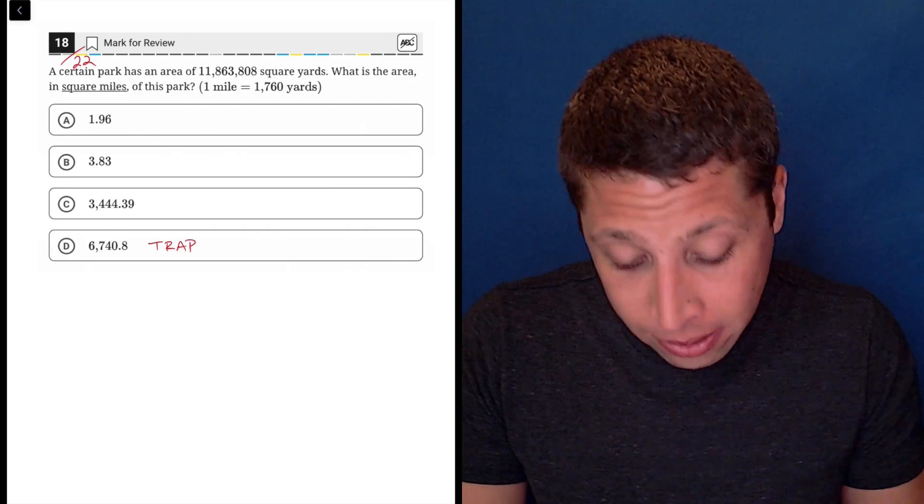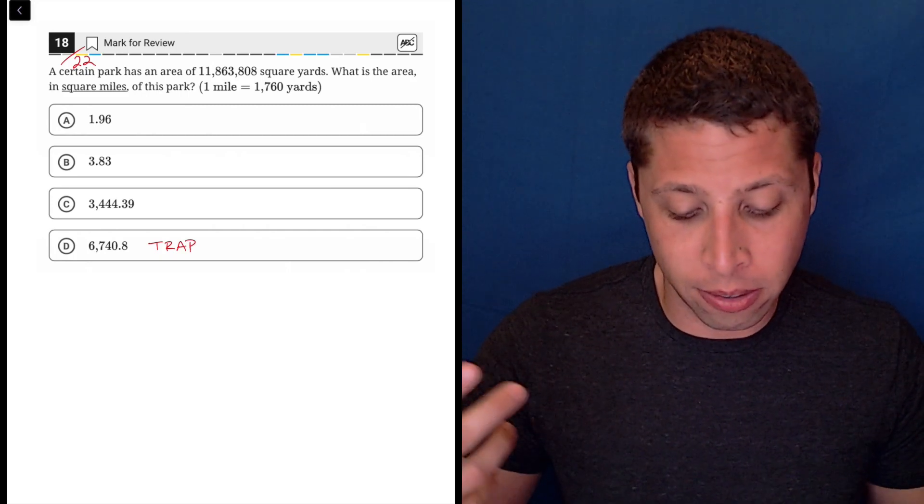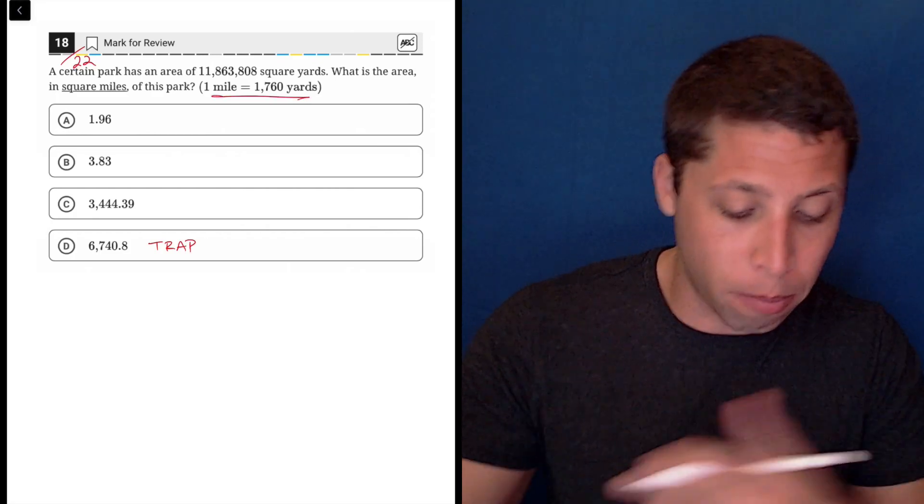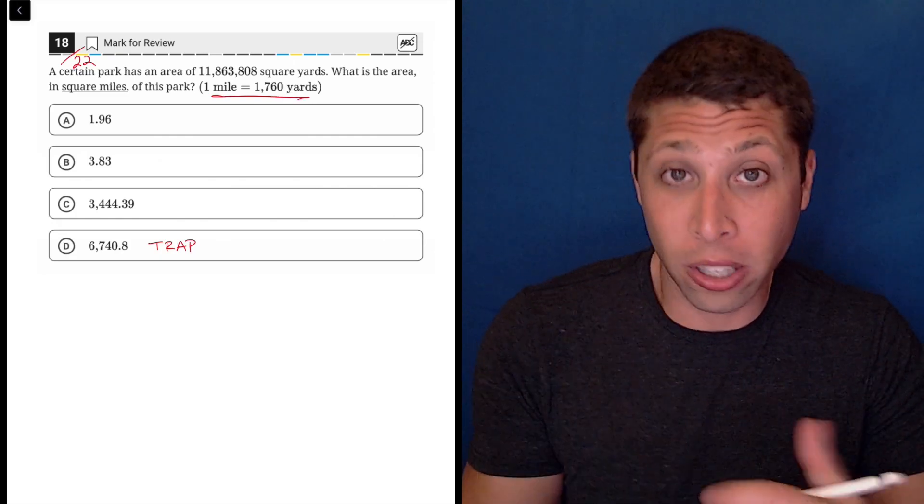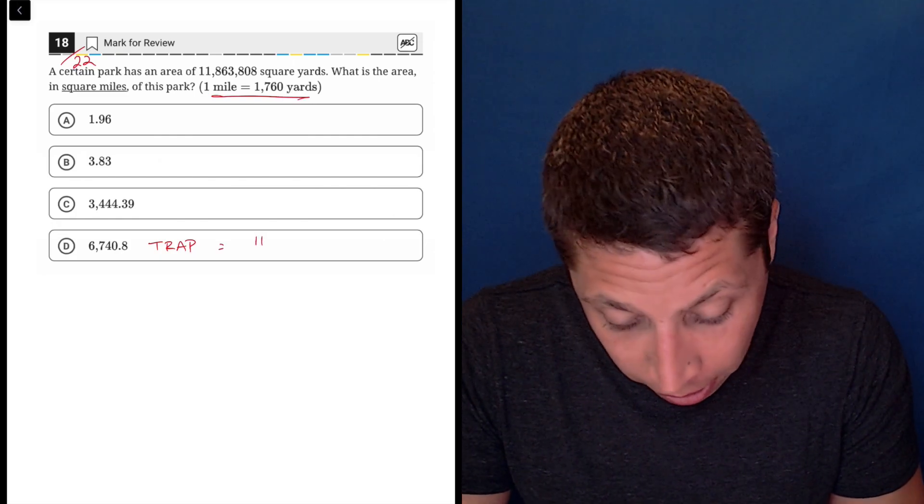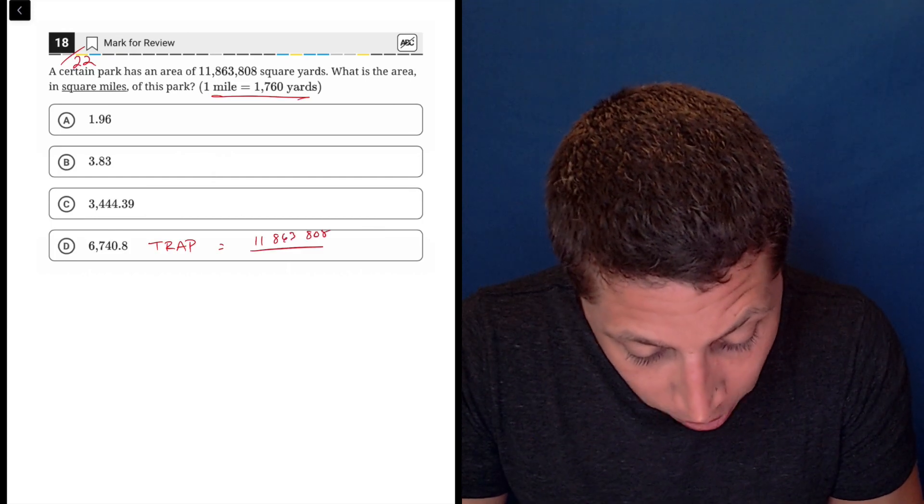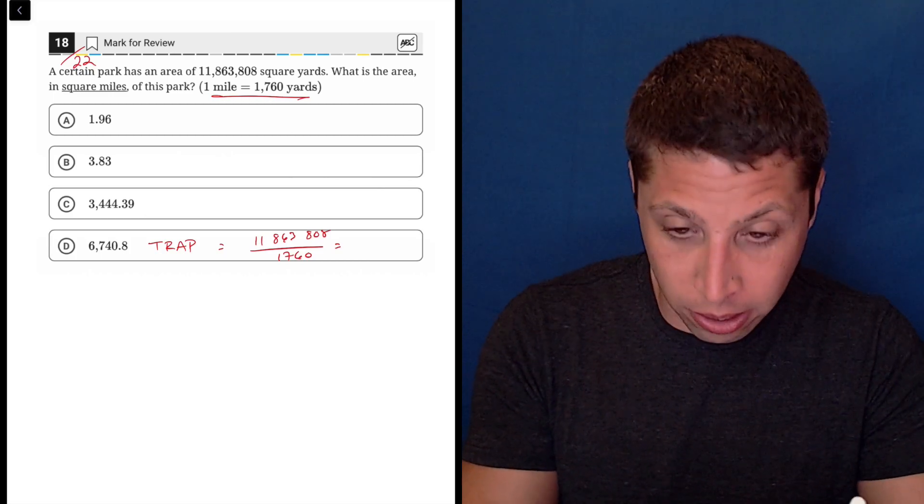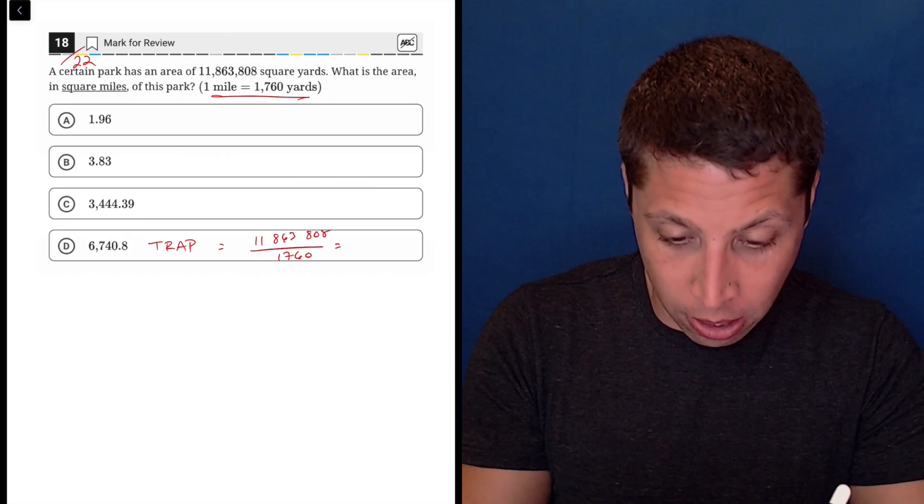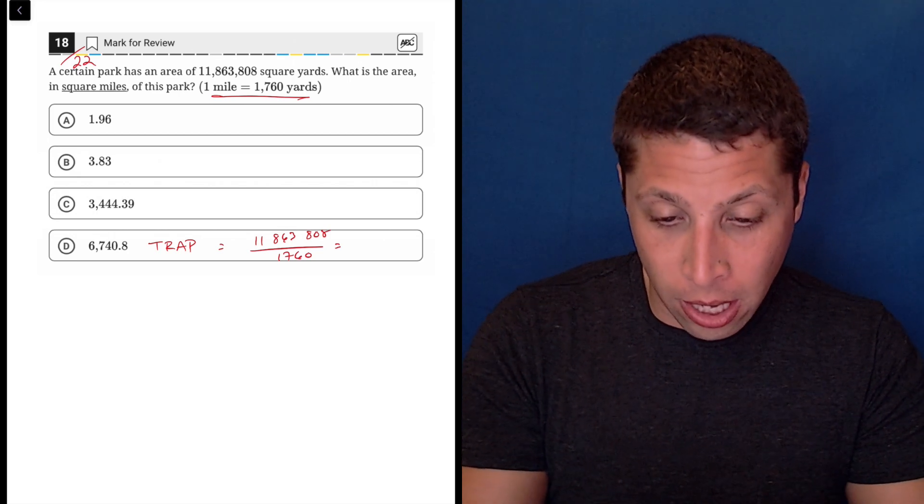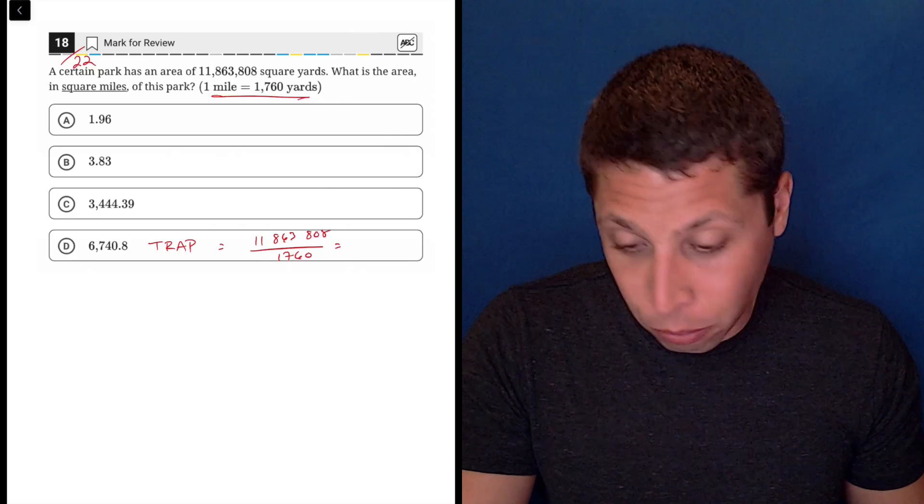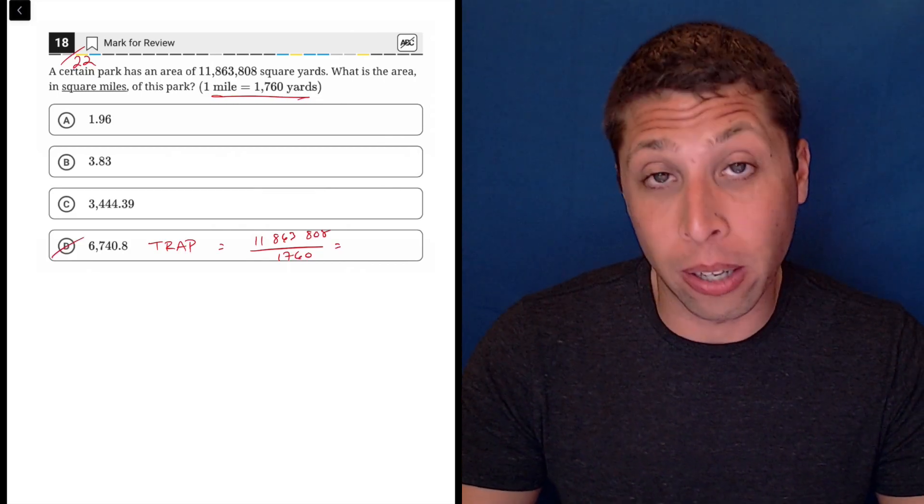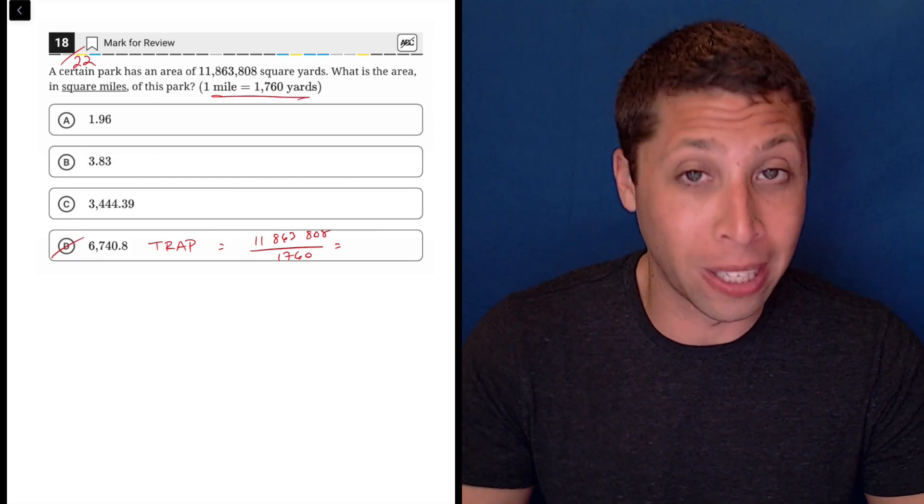And the reason this is a trap is it's basically just you take your 11,863,808 square yards and you use the conversion so you're like, oh, well, if one mile is 1,760 yards, then we're just going to divide, right? So we'll take 11,863,808 and we divide by 1760 and I'm pretty sure it gives us that. Let me just make sure 11,863,808 divided by 1760 and yeah, it's 6,740.8. So this is wrong. It's too easy. There's not going to be just like a single step of division that you need to do for something that's supposed to be a hard question like this.